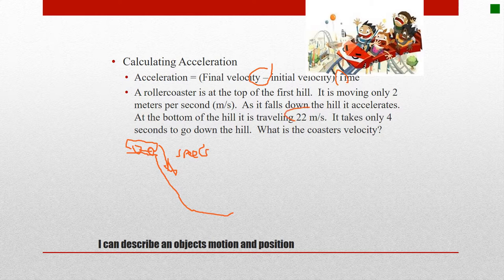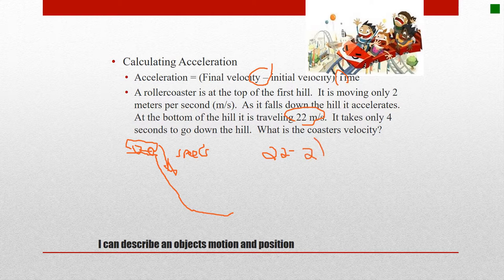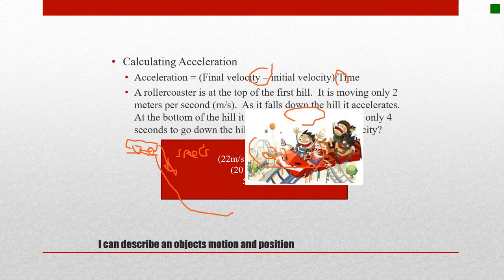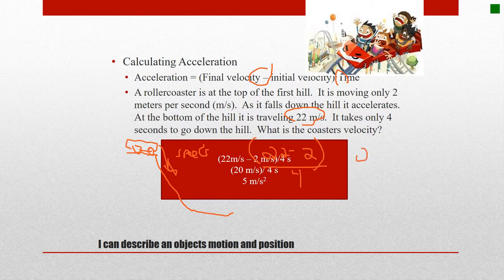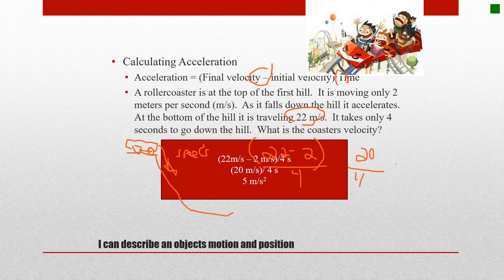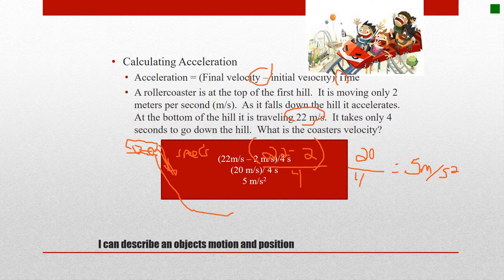So final velocity, 22. We'll put that first. 22 minus its initial velocity, two meters per second. Now I'm going to put parenthesis here because we have to do that first. And then divide it by the time, which is only four seconds. So 22 minus 2 is 20. Divide it by 4. Well, 20 divided by 4 is 5 meters per second per second. I'm going to put per squared now. That means for every second, this roller coaster increased its speed by 5 meters.